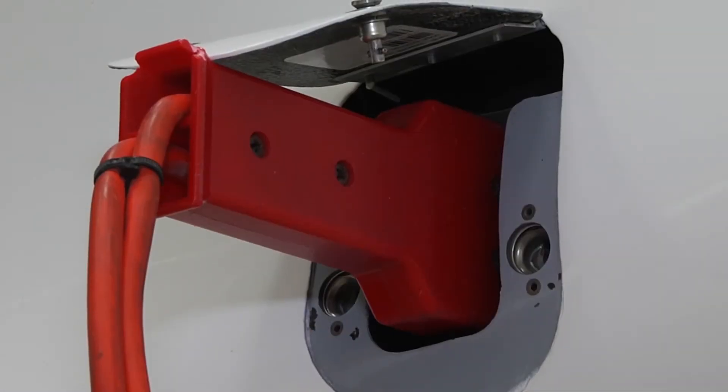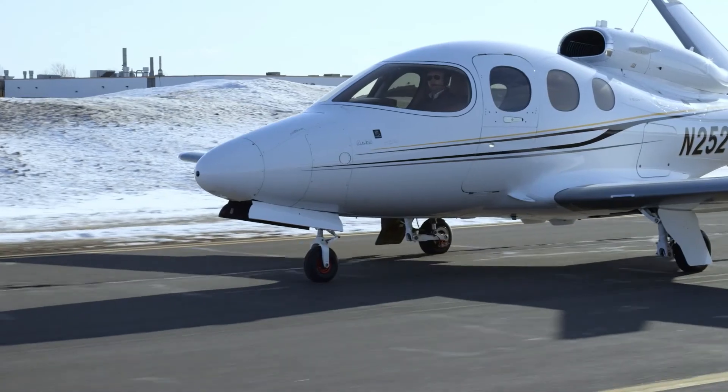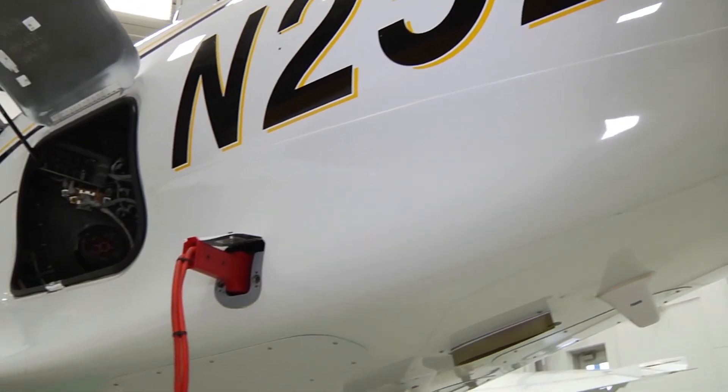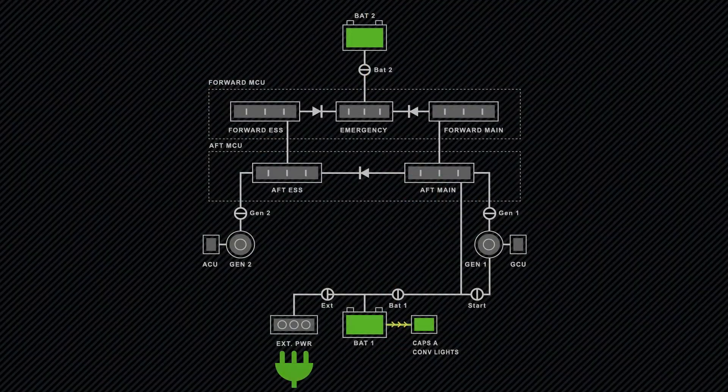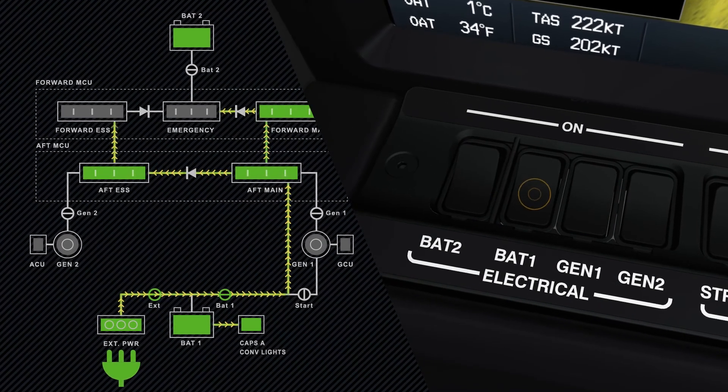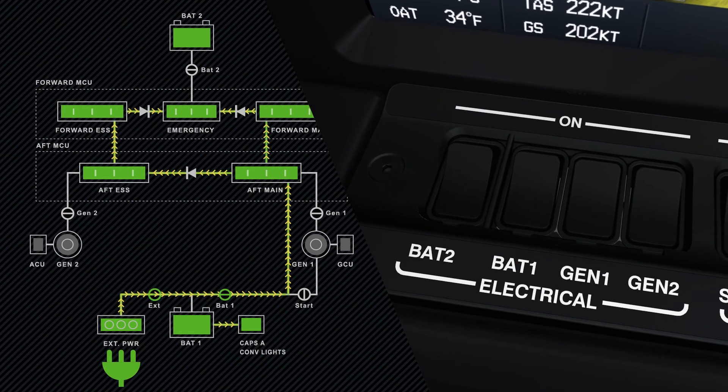Your Vision Jet is also equipped with an external power receptacle, which can be connected to the ground power units available at many FBOs. You'll find this useful to power avionics during pre-flight preparation and for engine starting, particularly during cold weather operations. Located below and aft of the baggage compartment door, external power is routed onto the main bus and is controlled via the BAT1 switch on the bolster switch panel.